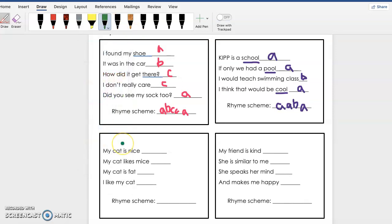So the next poem: My cat is nice. Remember guys, we're starting off with A. My cat likes mice. Nice, mice rhyme. Yep, you said it, I'm giving it an A. My cat is fat. I like my cat. So we know that fat does not rhyme with nice and mice, so I'm going to give it a B. But I do know that fat rhymes with cat, so of course I'm going to give it another B. Okay, so the rhyme scheme of this poem is A-A-B-B.